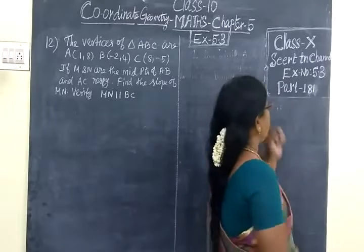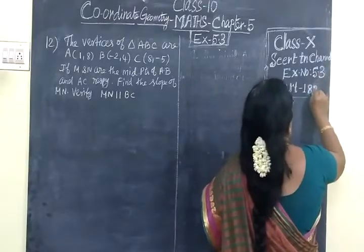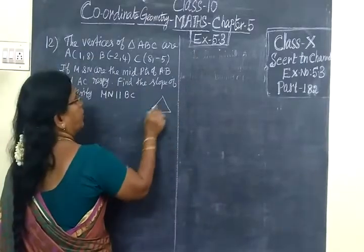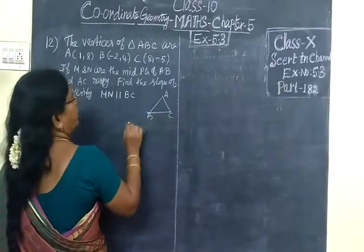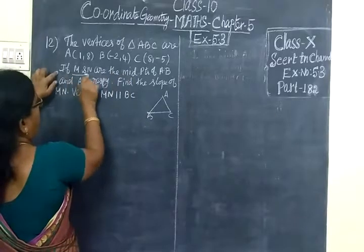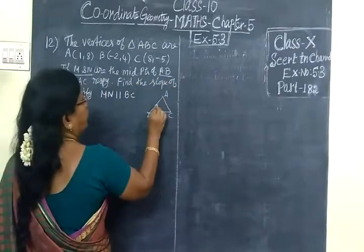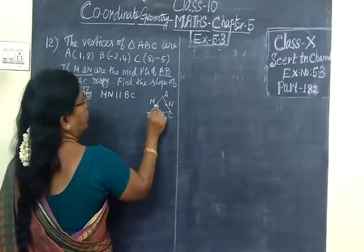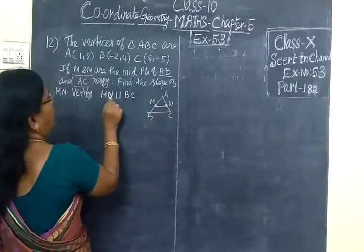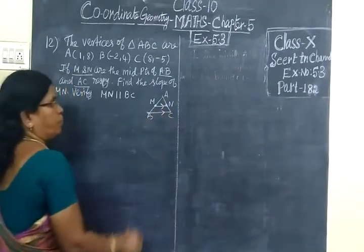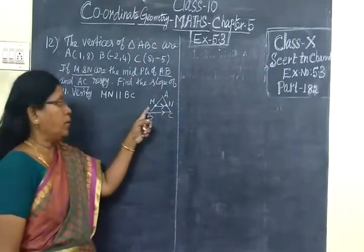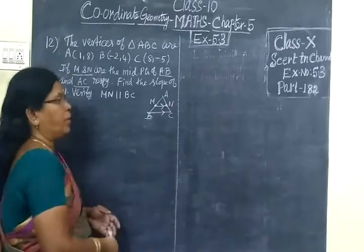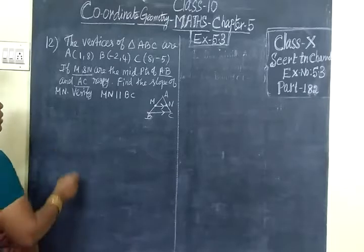Now we are going to see problem 182 from exercise 5.3. The vertices of triangle ABC are A(1,9), B(-1,4), and C(8,-5). M and N are the midpoints of AB and AC respectively. We need to show that MN is parallel to BC. We know that for parallel lines, the slopes are equal. This is a very simple and important question.